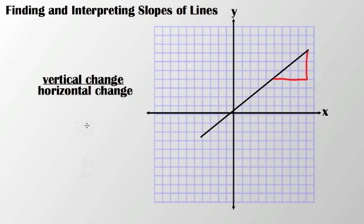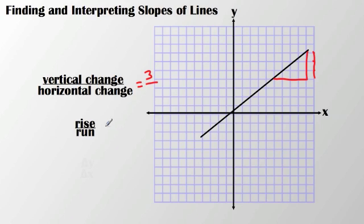Another term for the vertical change over the horizontal change is rise over run. Looking at the vertical change, I can see it increases one, two, three units. So I have a rise of three units over a run of one, two, three, four units. So the slope of this line would be three-fourths.